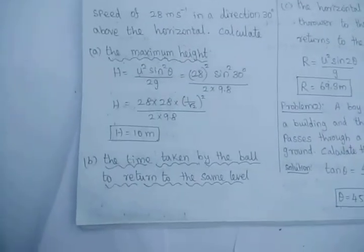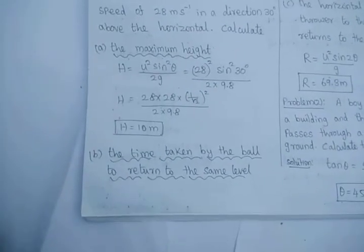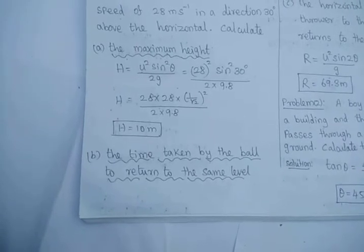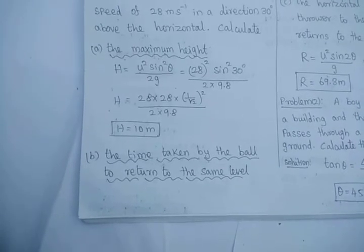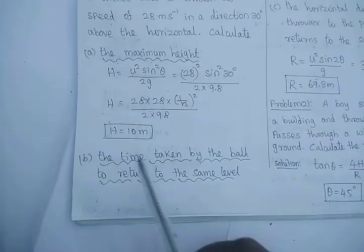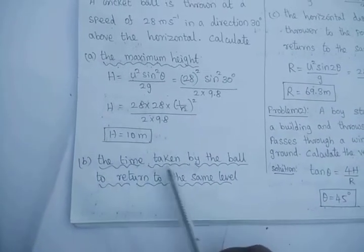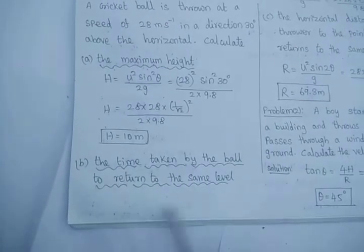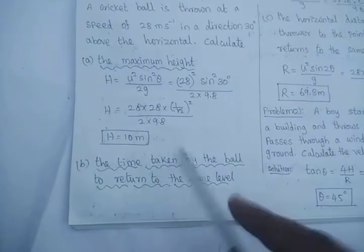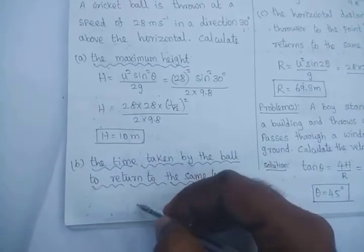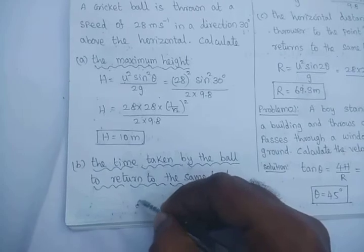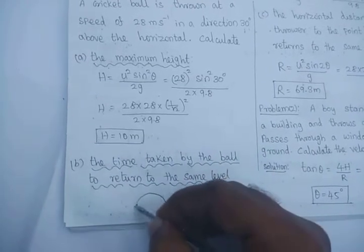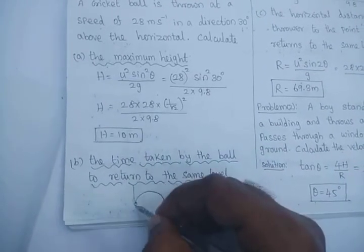The next subdivision is the time taken by the ball to return to the same level. Time taken by the ball to return to the same level means from the initial point to the final point — what is the maximum time taken?